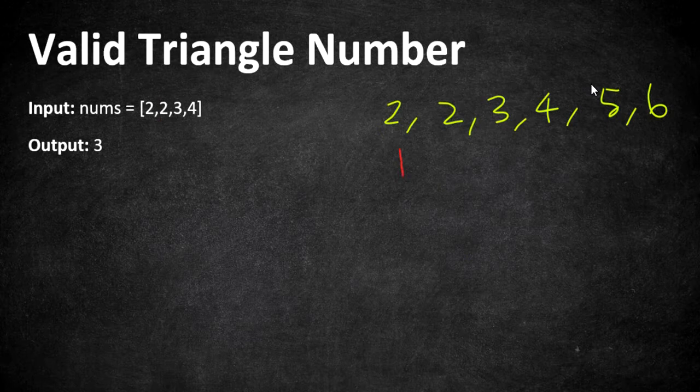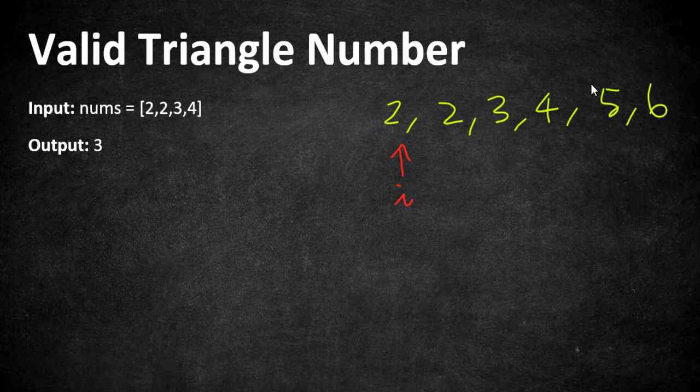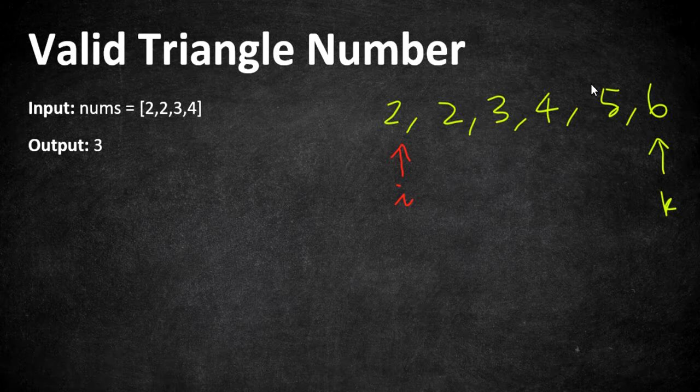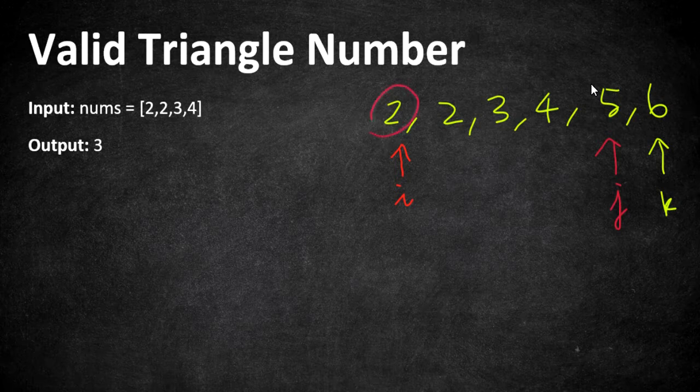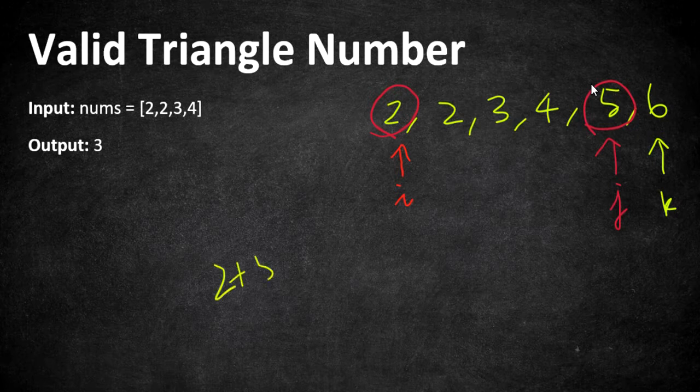I am going to have my pointer i at the very starting position, and my pointer k at the ending position, and my pointer j is going to be one pointer before k. What we are going to do is we are going to check whether i plus j is greater than k.